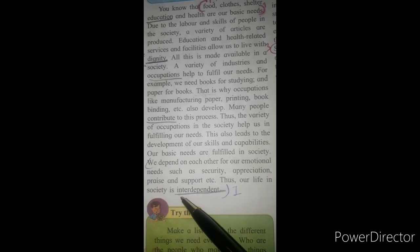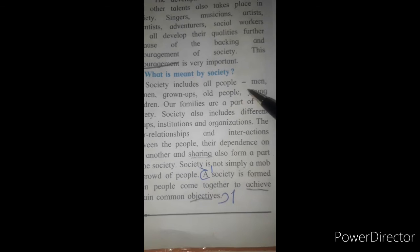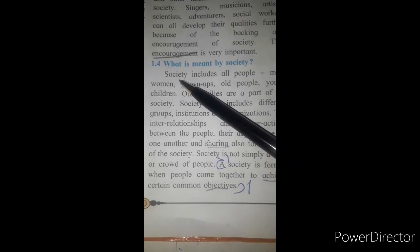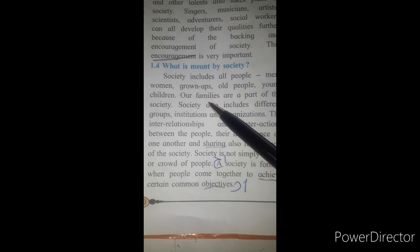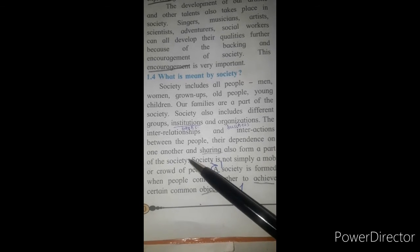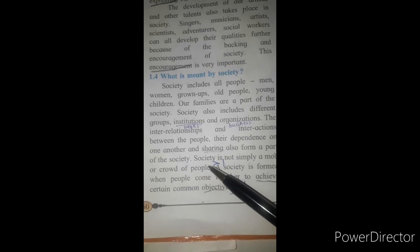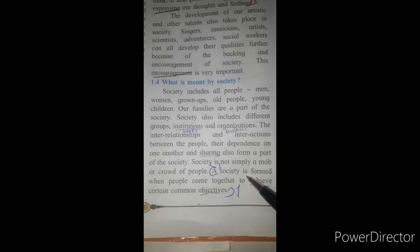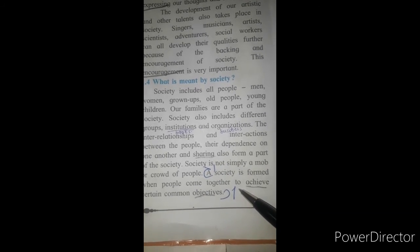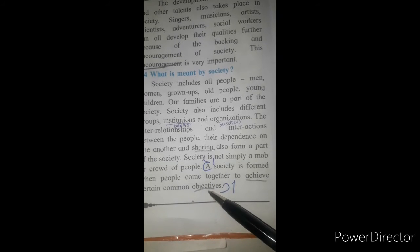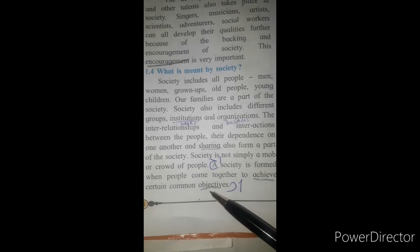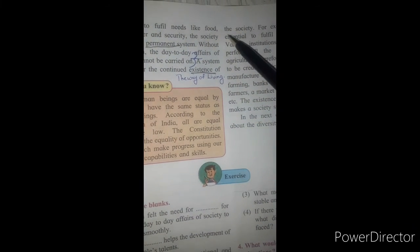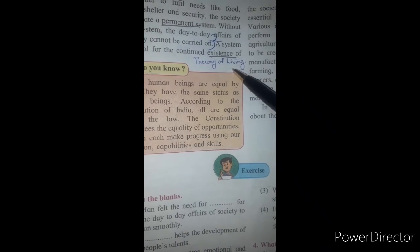What is meant by society? Society means men, women, grown-ups, old people, young children are called society. Even our family are also part of our society. Dependence on one another and sharing also a part of society. Society is not a mob or crowd of people. A society is formed when people come together to achieve certain common objectives. The system is essential for the continued existence of the society. Existence means the way of living.